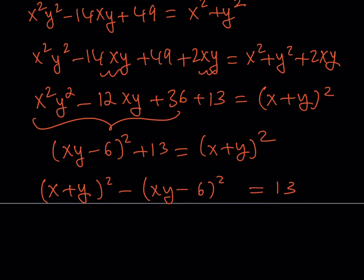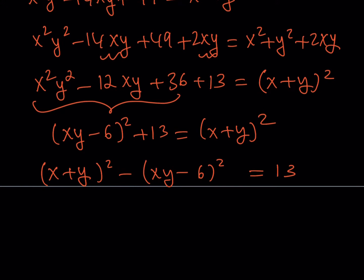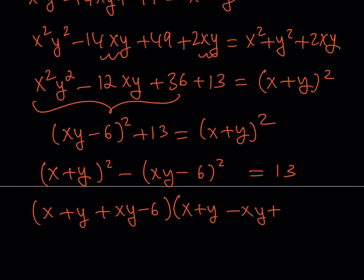Factoring the difference of two squares gives [x + y + (xy − 6)] × [x + y − (xy − 6)] = 13. Then we look at cases — since 13 is prime, there aren't many.